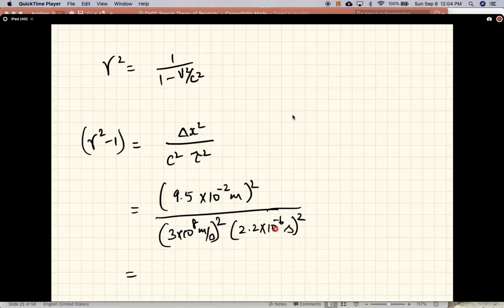And this is 10 to the minus 12. So the powers of 10 cancel. So this works out to 9.5 squared divided by 9 times 2.2 squared.